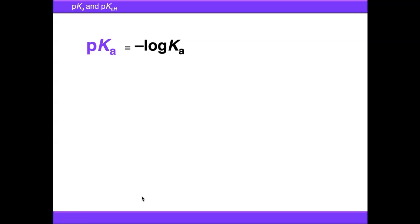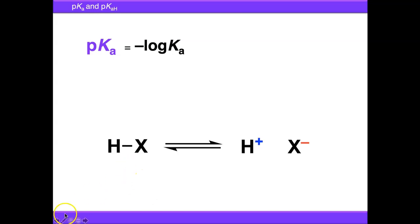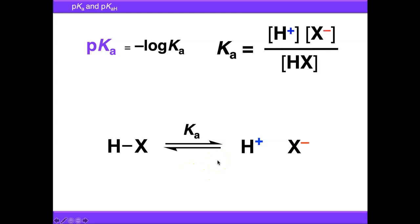pKa is the minus logarithm of Ka, which is the acid dissociation constant. For a general reaction of a molecule HX breaking into its component ions H⁺ and X⁻, Ka is the equilibrium constant for this process, worked out as the concentration of the products — the dissociated ions — over the concentration of the starting materials.